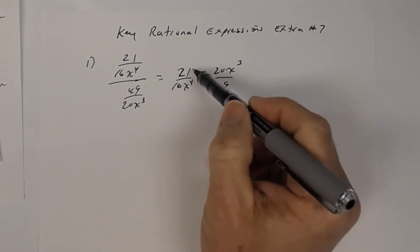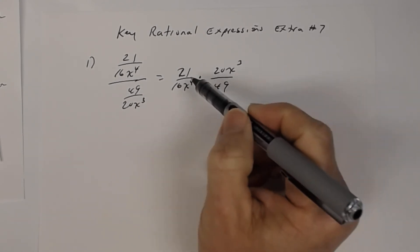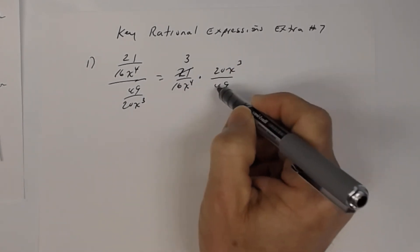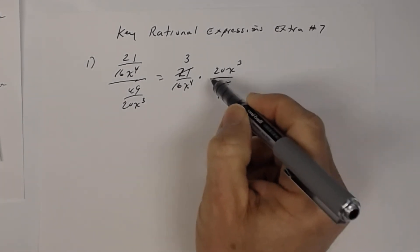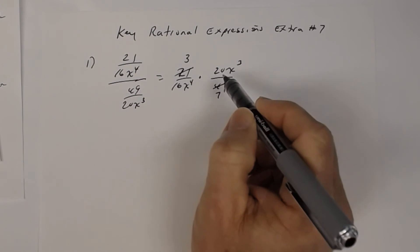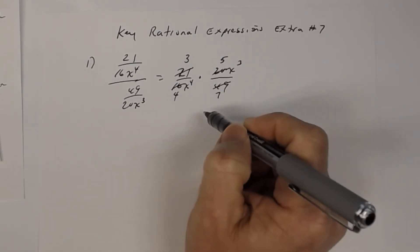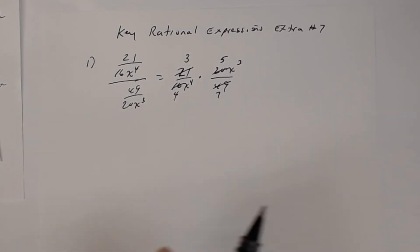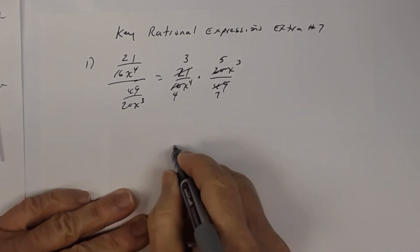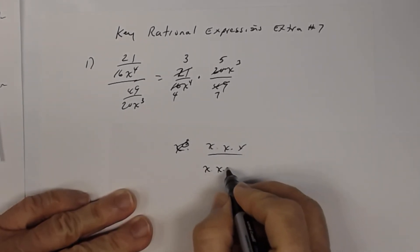These are all monomial factors. For twenty-one and forty-nine, the common factor is seven: twenty-one divided by seven is three, forty-nine divided by seven is seven. For twenty and sixteen, the greatest common factor is four: twenty divided by four is five, sixteen divided by four is four. Now for x cubed and x to the fourth: x cubed means x times x times x, and x to the fourth means x times x times x times x.